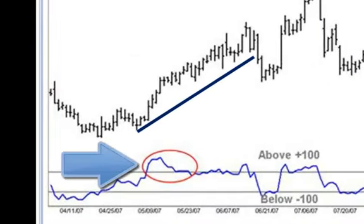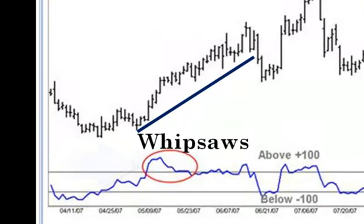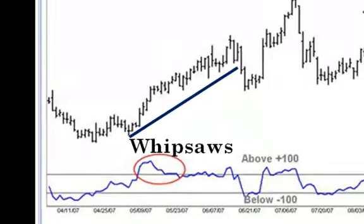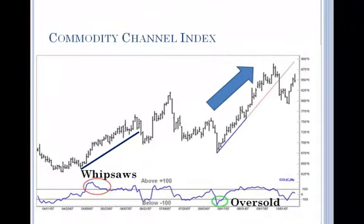However, back in May 2007, CCI moved above positive 100 several times, but prices still remained bullish. Thus, it is better if CCI is used in conjunction with other technical indicators so as to limit the number of whipsaws.